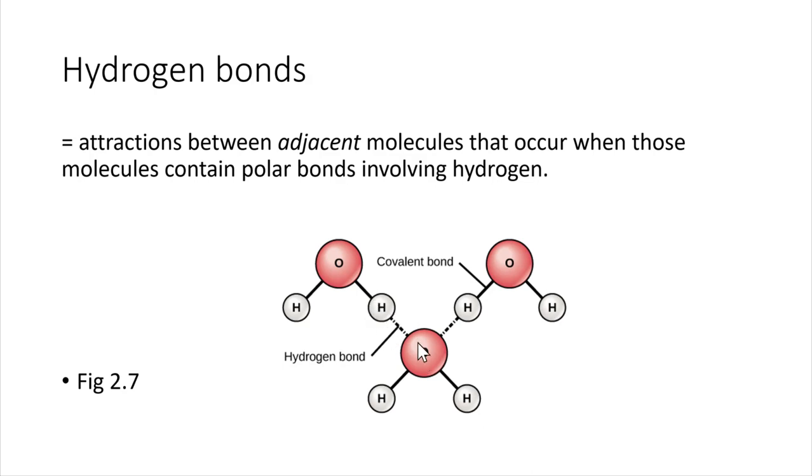If we've got a positive end and a negative end of two adjacent molecules, they're going to tend to kind of be attracted to each other. They will tend to stick together, kind of like a magnet. So right there, that attraction, that is what we call a hydrogen bond. It's an attraction that involves hydrogen in one molecule and some negative charge in another molecule, usually oxygen.